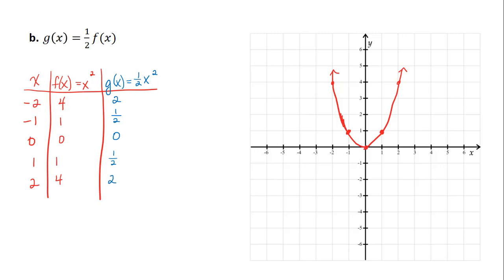And again, I could plug it in if I really wanted to. 1 half times negative 2 squared is 1 half times 4, which is 2. So I plot then negative 2, 2, negative 1, 1 half, 0, 0, 1, 1 half, and 2, 2. So if I draw the graph through these points, notice my shape has distorted again. But it's still a parabola. And it's a parabola that's been kind of compressed or shrunk. It's like we're pushing it down.